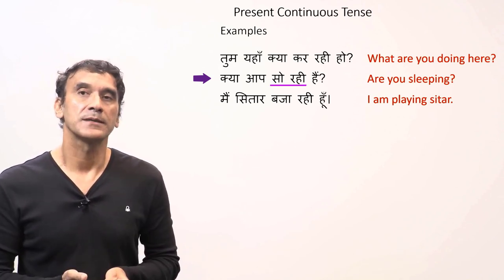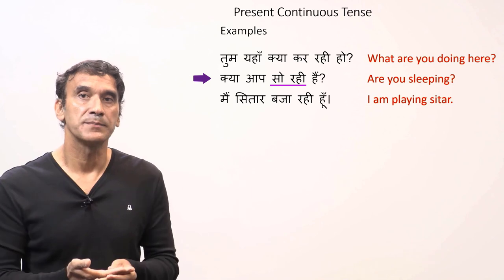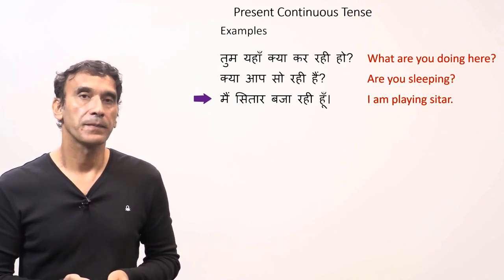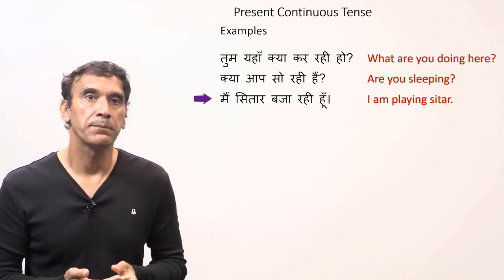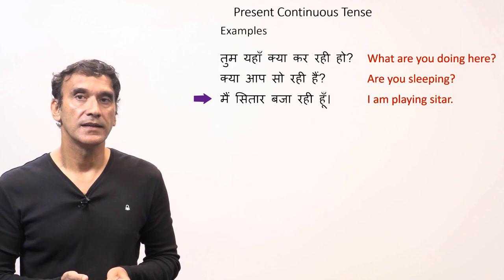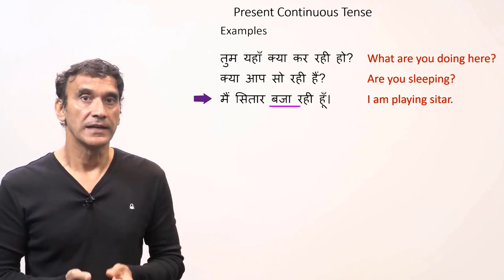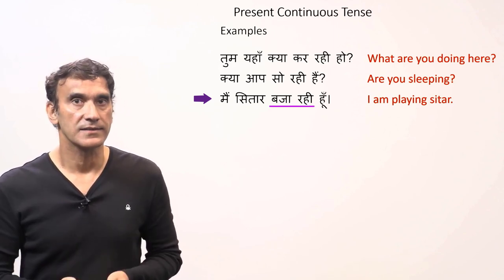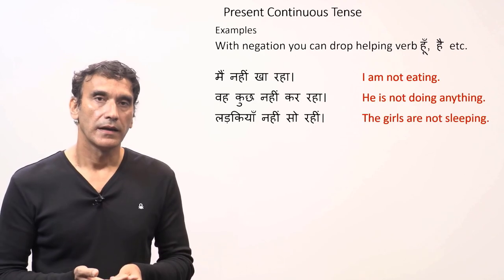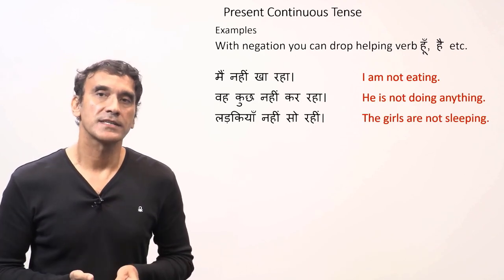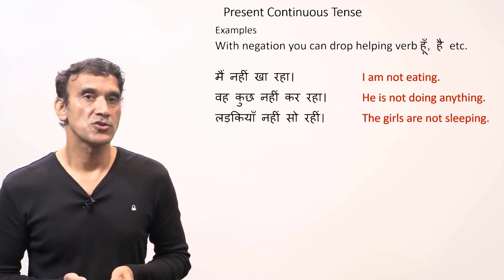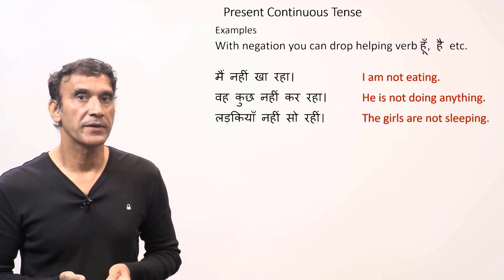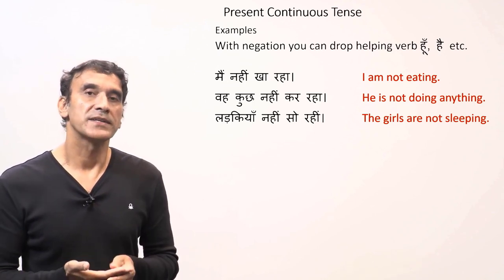'Kya aap so rahi hain?' — are you sleeping? Again a feminine subject is being addressed. 'Main sitar baja rahi hun' — I'm playing sitar. Again a feminine subject, meaning a girl is uttering this sentence.